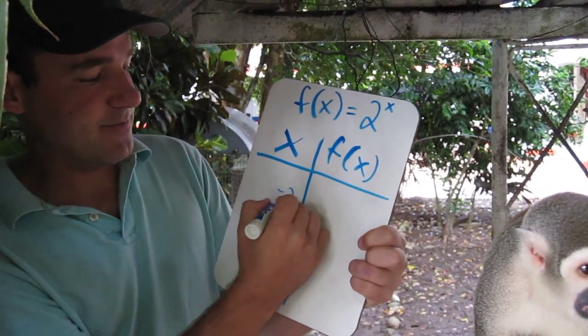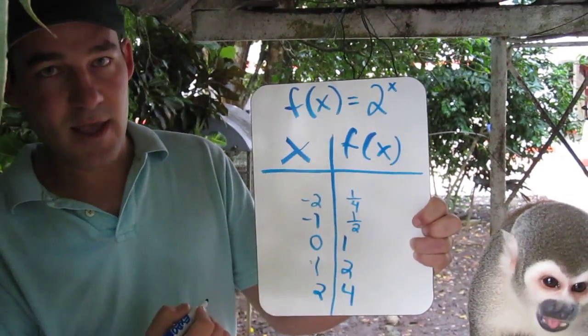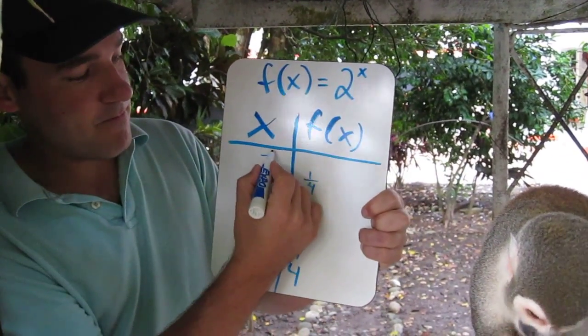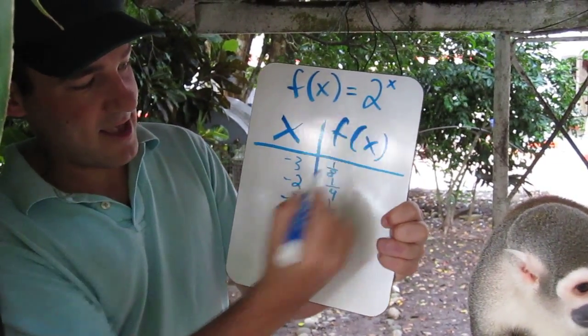When x equals negative 2, we have 1 fourth. And when x equals negative 3, we have 1 eighth.